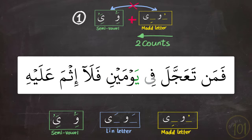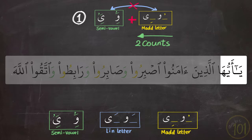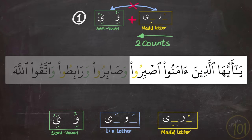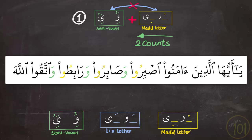So we do not fuse the two يا's together by saying في يومين, because this would be fusing the two يا's together and that is a mistake. Another example involving the وو — here we see that the مد letter is followed by a semi-vowel, and so it should sound like this: يا أيها الذين آمنوا اصبروا وصابروا ورابطوا واتقوا الله. So we say اصبروا وصابروا, not فusing them — that is wrong and should not be read like this.